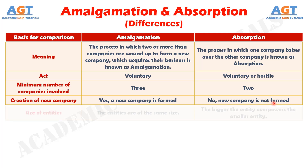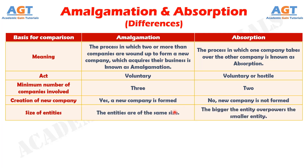Number 5: The size of the companies going through amalgamation is more or less the same. On the contrary, one company of bigger size overpowers the company of smaller size in absorption.